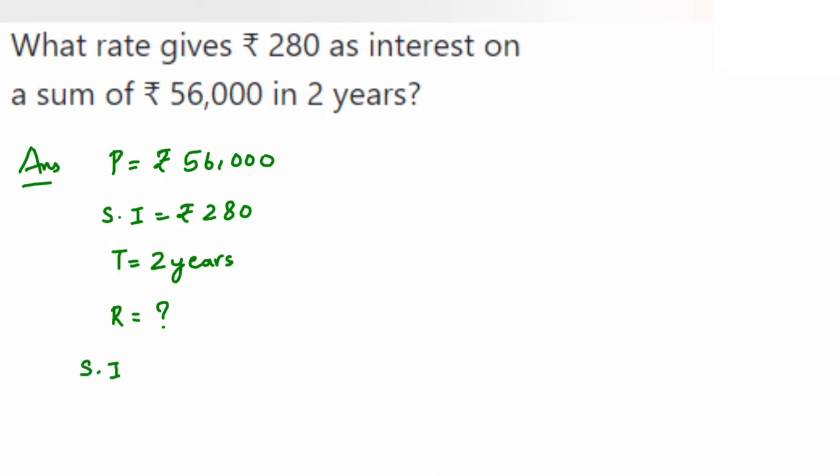We can use one more formula that we got from the same formula by cross multiplying. That formula is rate is equal to simple interest multiplied by 100 upon principal into time.